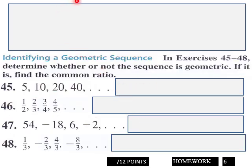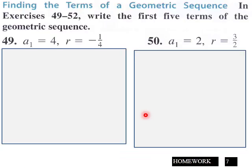Page 6 from the previous, and then 45, 46, 47, 48: Determine whether or not the sequence is geometric. If it is, find your common ratio here. Amongst these you got 12 points here for page 6. Page 7: Write the first five terms of this geometric sequence, 8 points here for page 7.